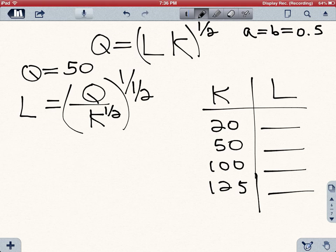And now you know that Q equals 50, so all you have to do to find the values of L is to plug in 50 for Q and the different values for K: 20, 50, 100, and 125.